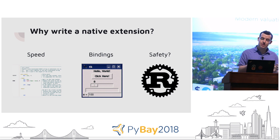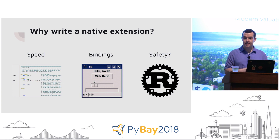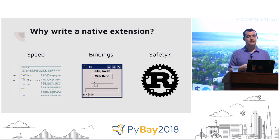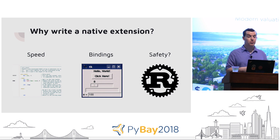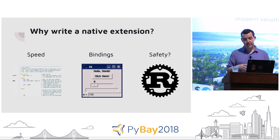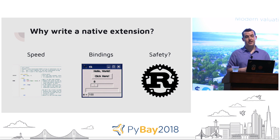Another reason, maybe a little less common, is safety. If you have some critical part of your code — say, security-oriented code — you might want more checks to make sure it's doing what you want. You might choose something like Rust or a formally verified language, where you have absolute certainty, or at least more certainty, that section of code is doing what you want.